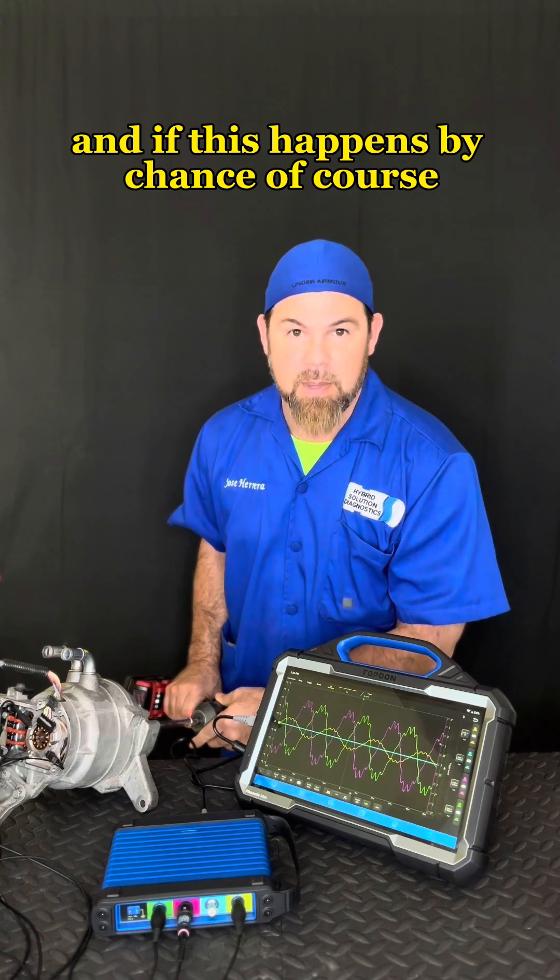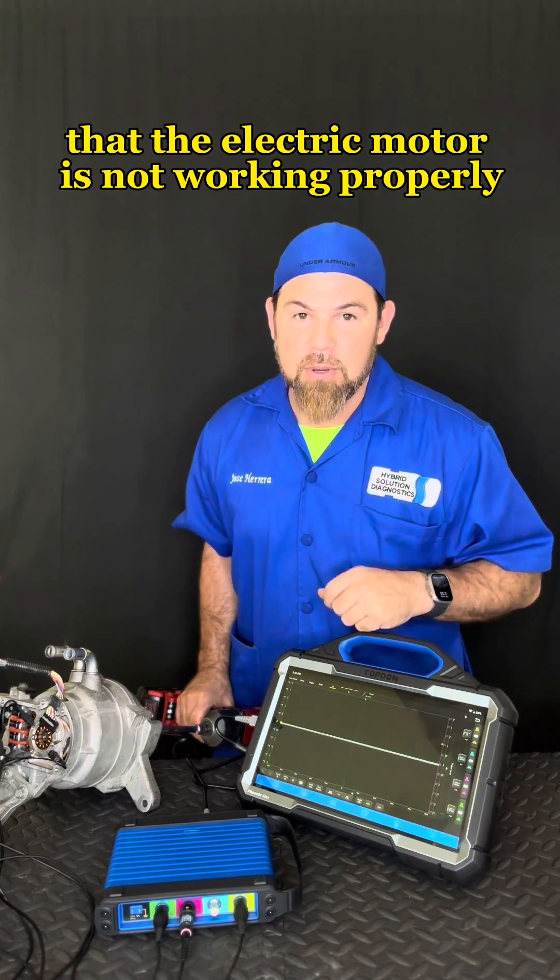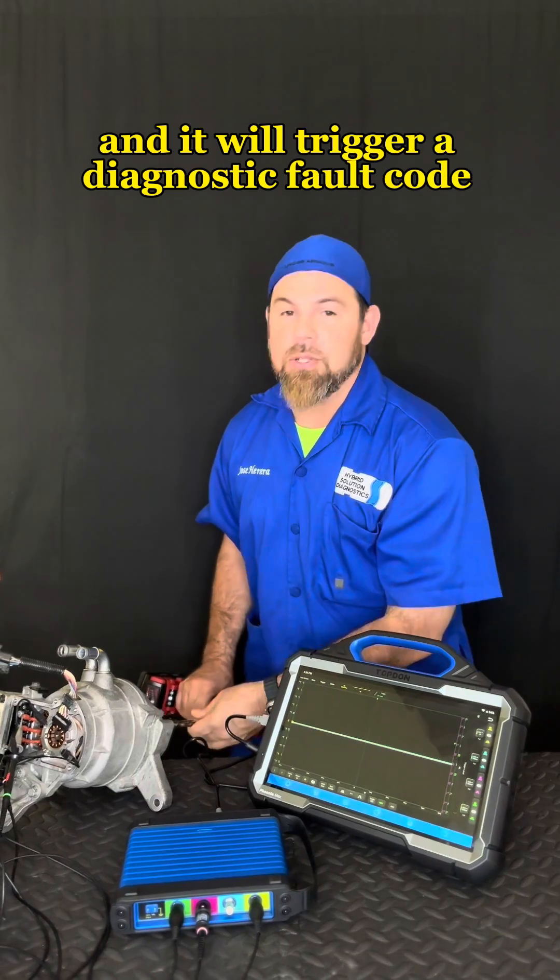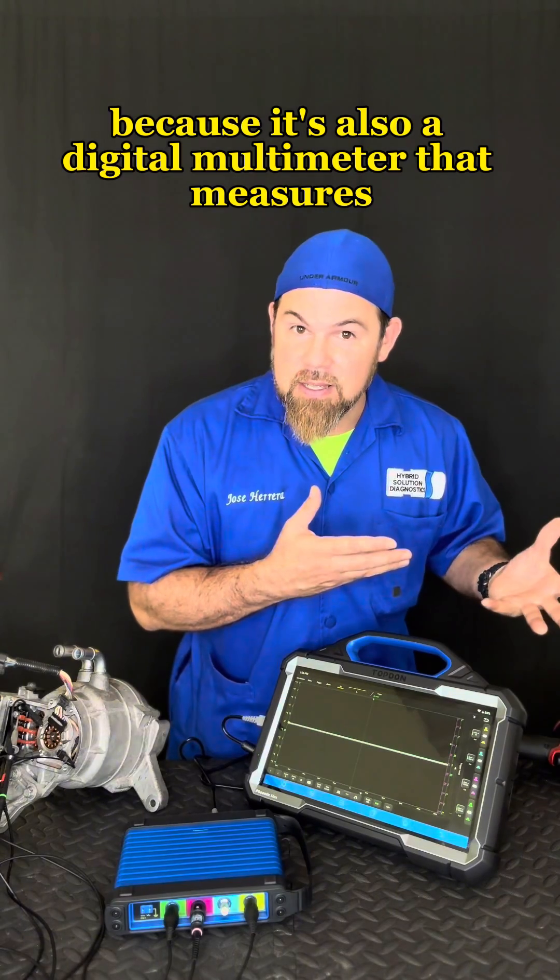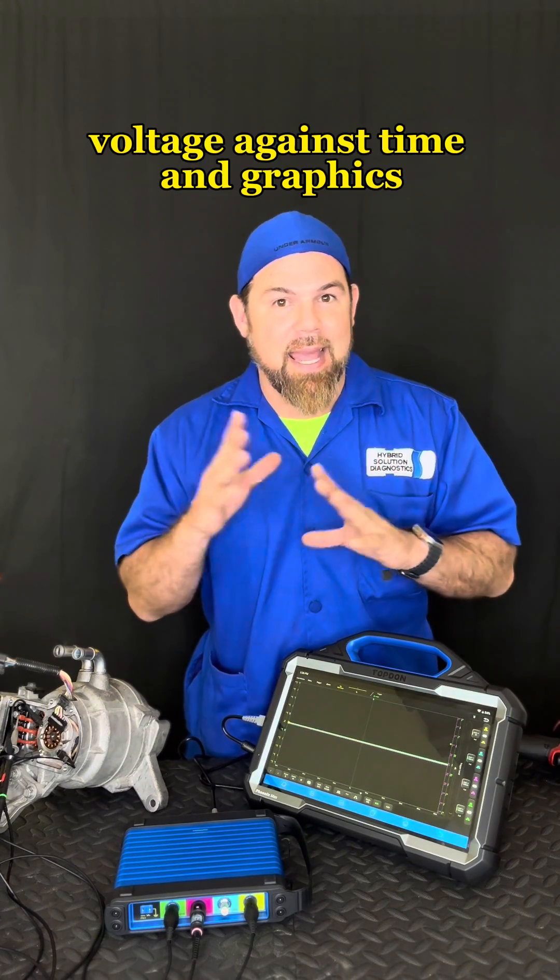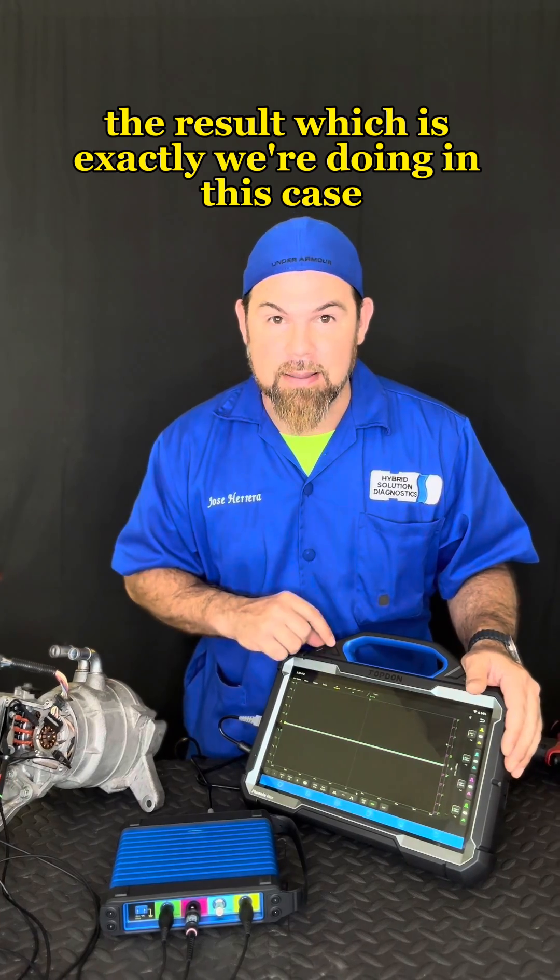And if this happens, the computer is going to detect that the electric motor is not working properly and it will trigger a diagnostic fault code. It's always better to use the oscilloscope because it's also a digital multimeter that measures voltage against time and graphs the result, which is exactly what we're doing in this case.